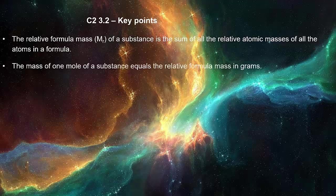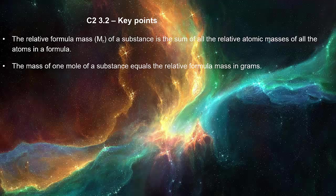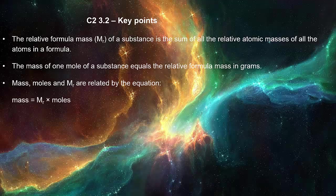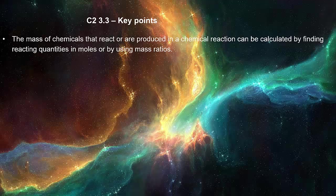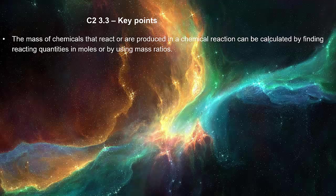The mass of one mole of a substance equals the relative formula mass in grams. Mass, moles, and Mr are related by the equation: mass equals Mr times moles. The mass of chemicals that react or are produced in a chemical reaction can be calculated by finding reacting quantities in moles or by using mass ratios.